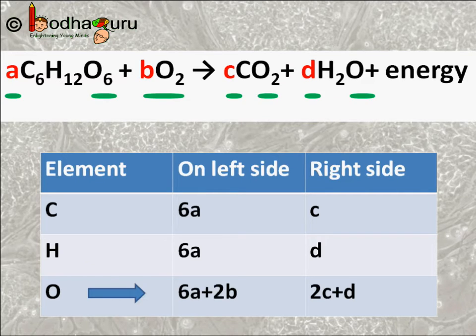Lastly, coming to oxygen molecules. Left hand side has 6A oxygen atoms from glucose and 2B from oxygen molecule. On the right hand side, 2C oxygen atoms are there from the carbon dioxide molecule and we have D from water. Now to balance the equation, both the right hand side and the left hand side should be equal. As the number of atoms are same on both sides, we can say 6A plus 2B is equal to 2C plus D.